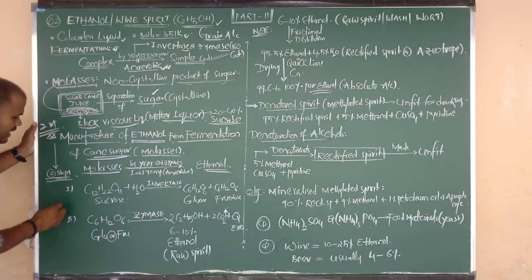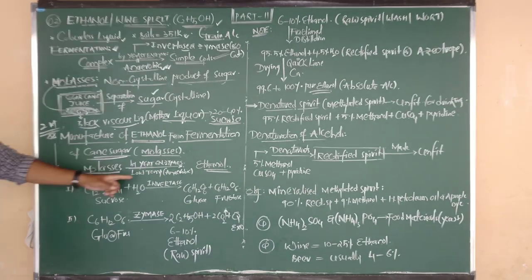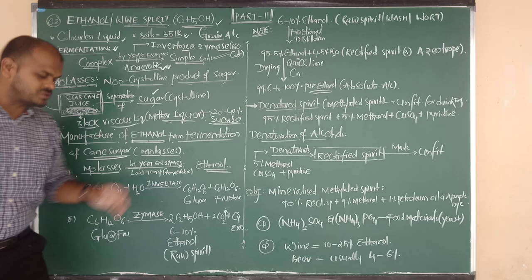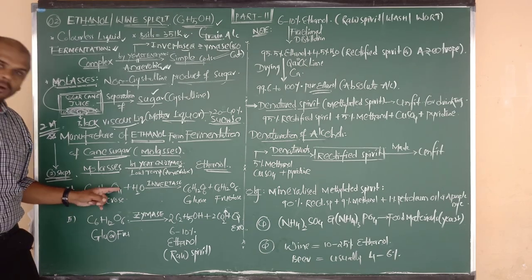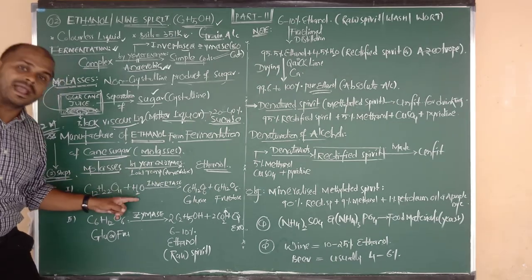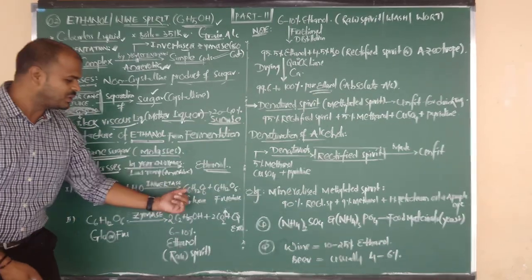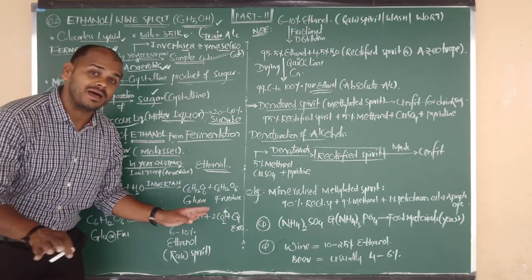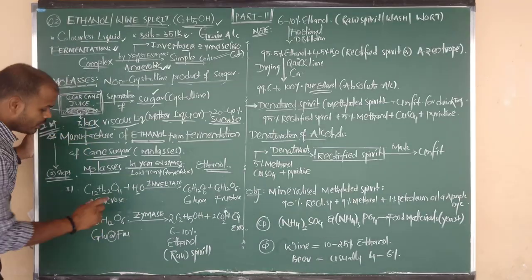The fermentation of molasses takes place in two steps. Step one involves the enzyme invertase. Molasses contains 20 to 40 percent sucrose, formula C12H22O11. Sucrose on hydrolysis in the presence of invertase enzyme changes into glucose and fructose, both having molecular formula C6H12O6, but differing slightly in functional group — one contains an aldehyde and one contains a ketone.